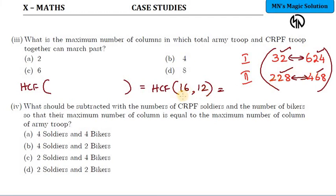So the common factor between 16 and 12 will give you the highest common factor of all these 4 numbers together. So it is a shortcut. So 16 and 12, the highest common factor is nothing but 4. So maximum number of columns in which the total army troop as well as CRPF troop can march together is 4 columns.